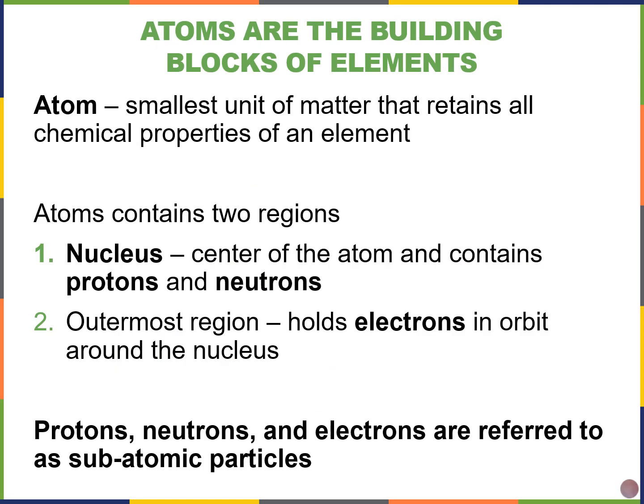Atoms are the smallest unit of matter that retains all chemical properties of an element. If you look at an atom, in the center we have a region we call the nucleus. The nucleus contains protons that are positively charged and neutrons that are neutral. Outside of this nucleus, we have our electrons that are negatively charged. These are subatomic particles. Your book has a great example where they tell us that one gold atom has all the properties of gold, like its chemical reactivity.